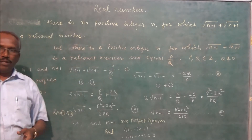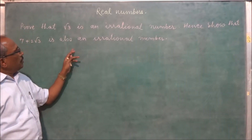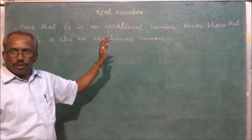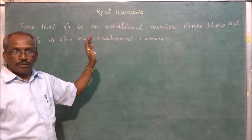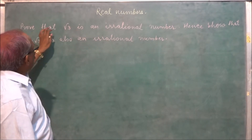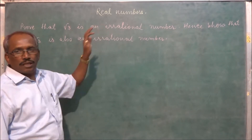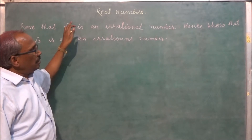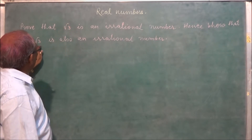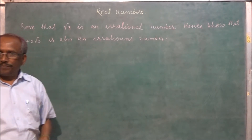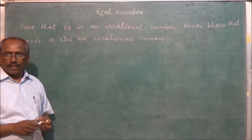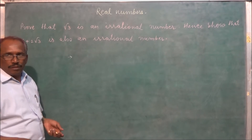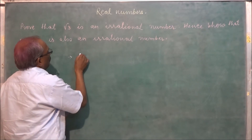Now let us consider the next important example. Prove that root 3 is an irrational number, and hence show that 7 plus 2 root 3 is also an irrational number. We will use the contradiction method to prove this.